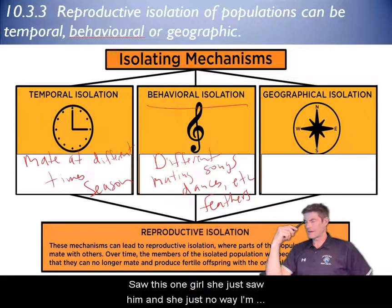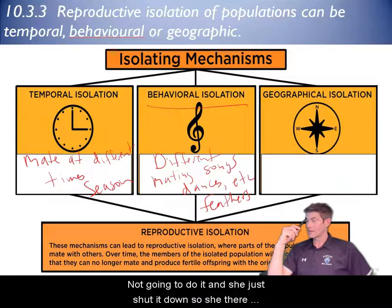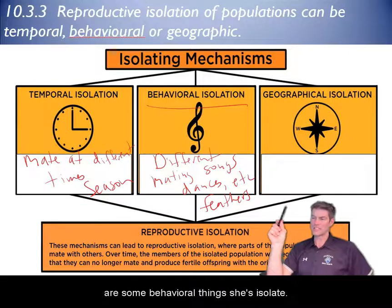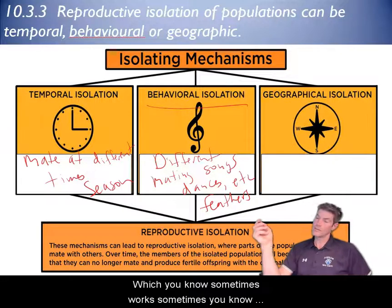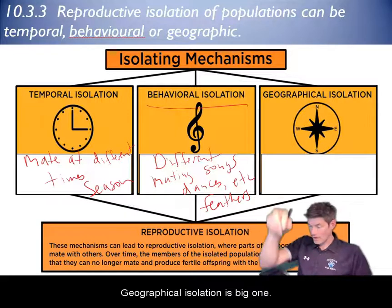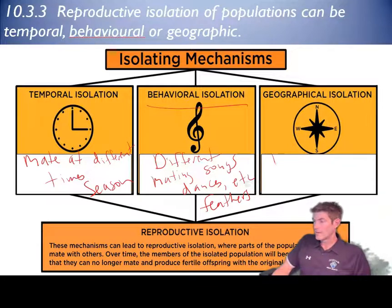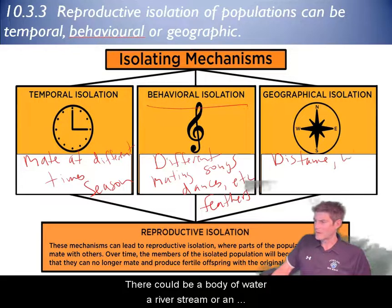On one of those dating shows, I saw this one girl — she just looked at him and said, no way, I'm not going to be his wife. She shut it down. So there was some behavioral thing that was isolating her. Sometimes something physical — looks can be deceiving. Then we have geographical isolation, which is a big one — they're just too far apart, like long-distance relationships.